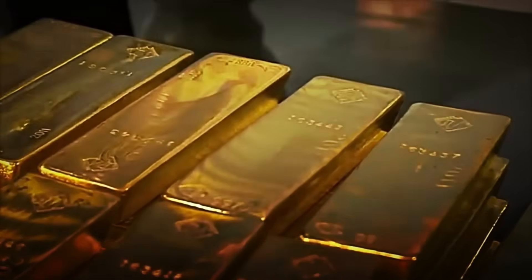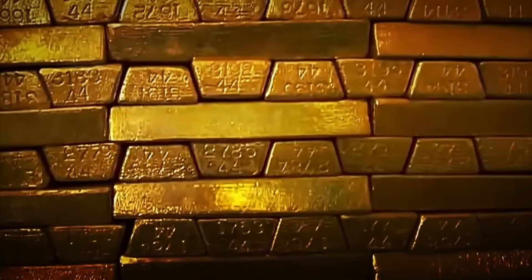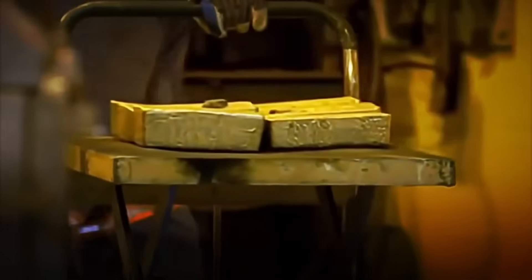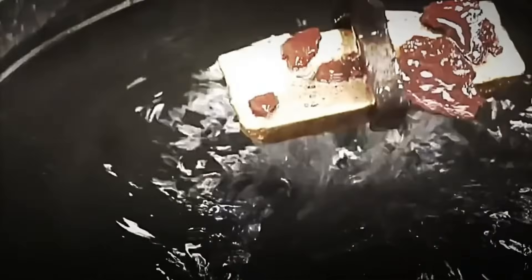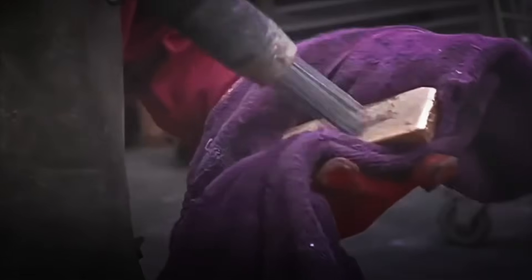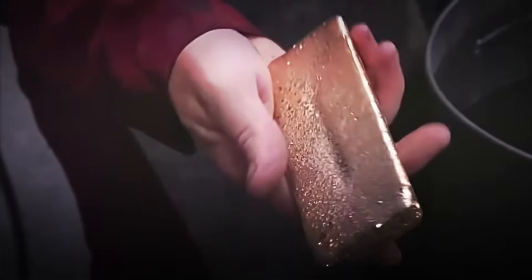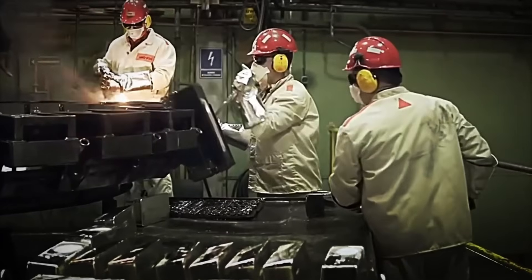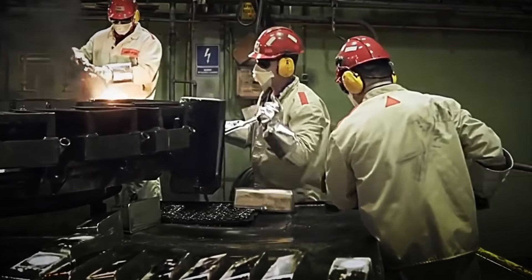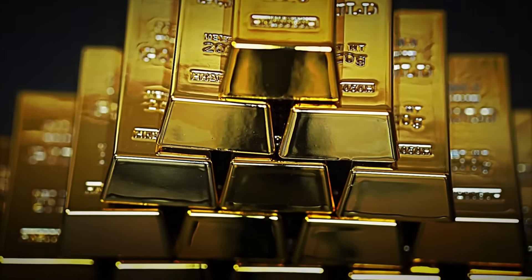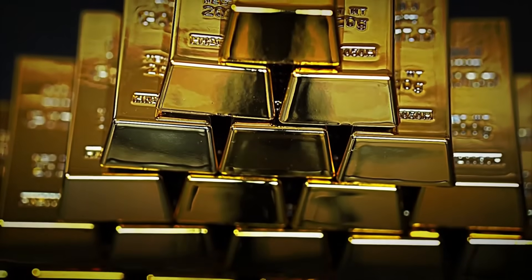This step is crucial to give the gold the form we all recognize as ingots. The resulting ingot weighs around 12.5 kilograms and is marked with a certification stamp, which ensures its purity and origin. At this point, one of these ingots can be worth up to a million dollars or more, so it is crucial to handle them with extreme caution at every stage of the process.